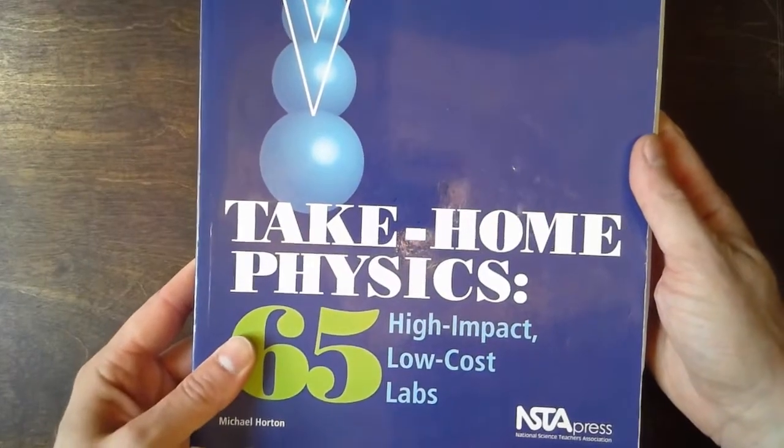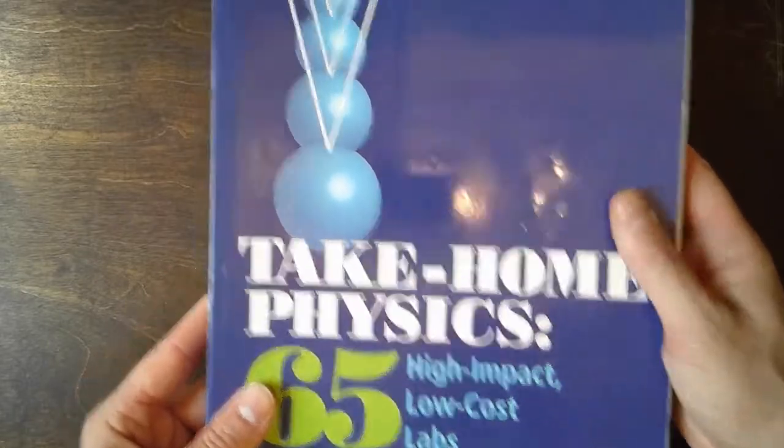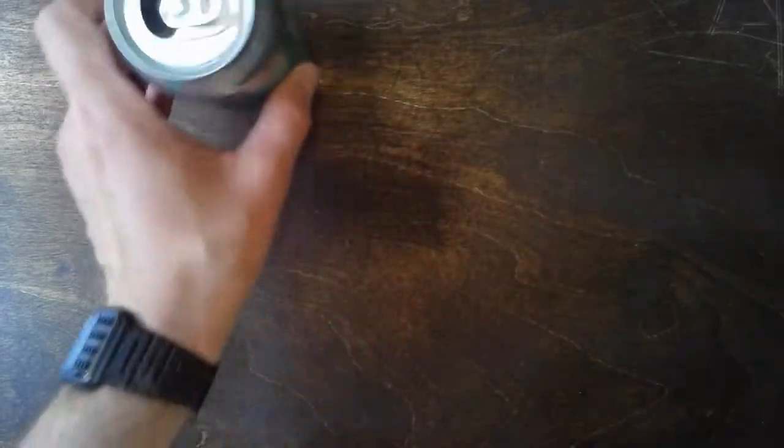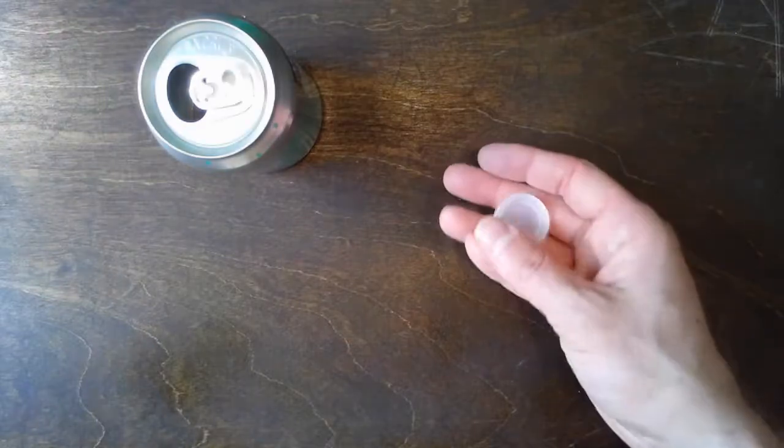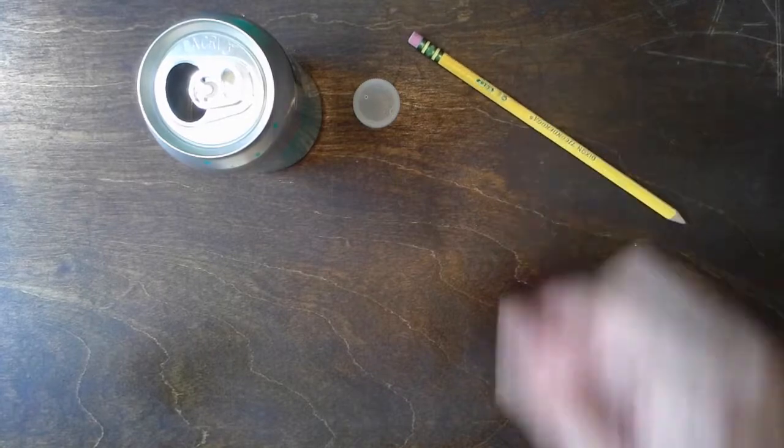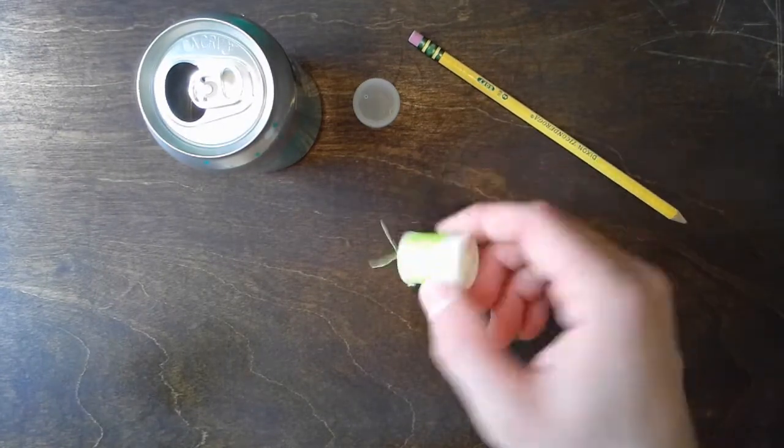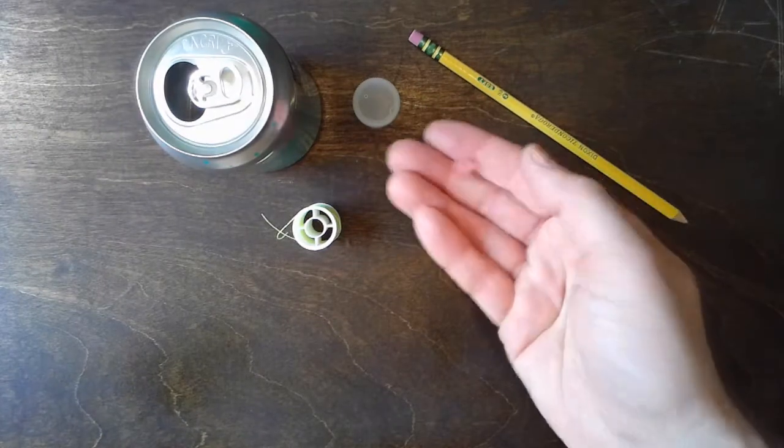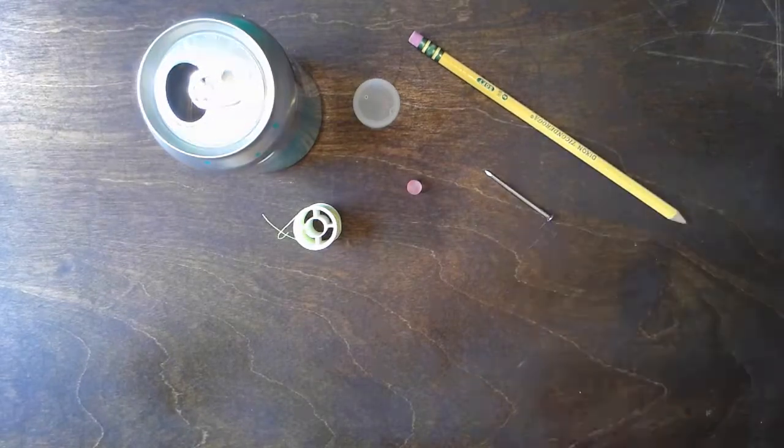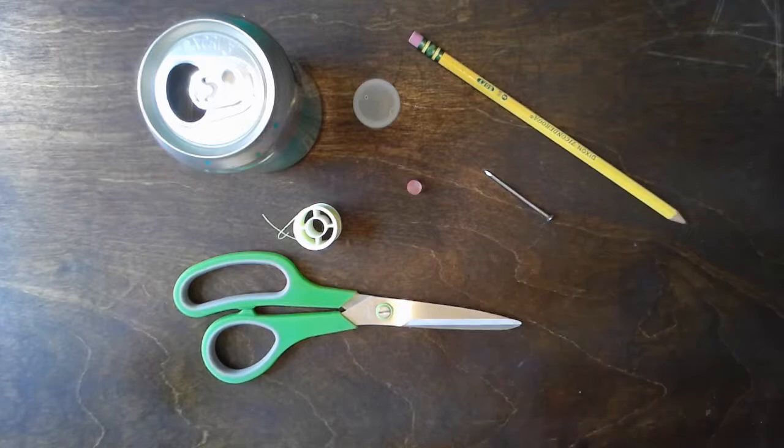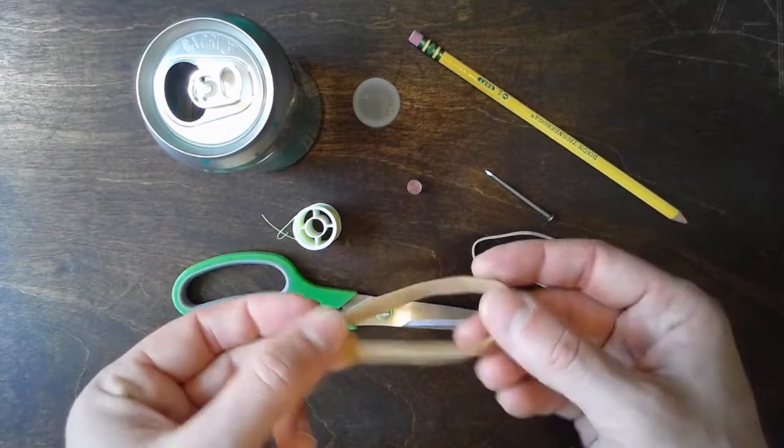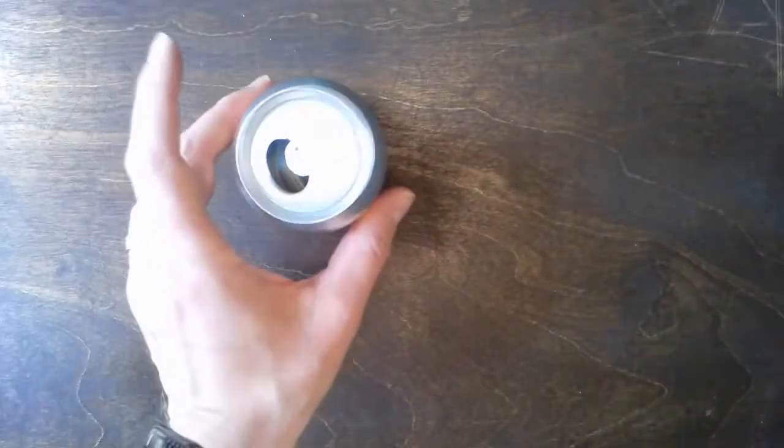Hello scientists, this is the walkthrough video for take-home physics lab 31. You need an empty soda can with the tab still attached, a plastic bottle cap, a pencil, a spool of sewing thread, a small bead, a nail, a pair of scissors, a thin rubber band, and a thick rubber band.